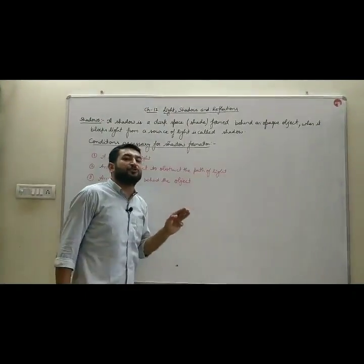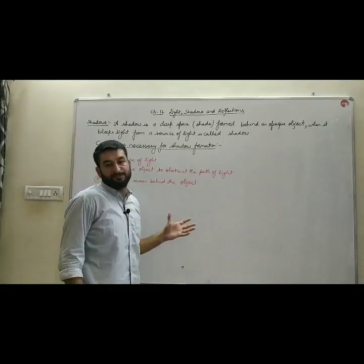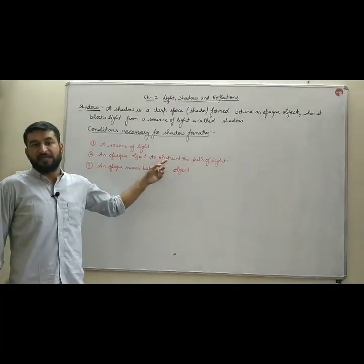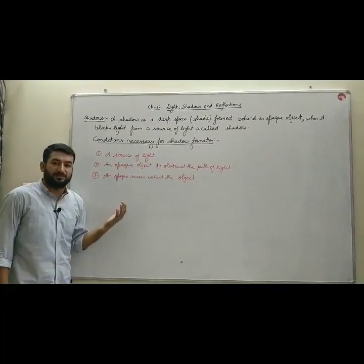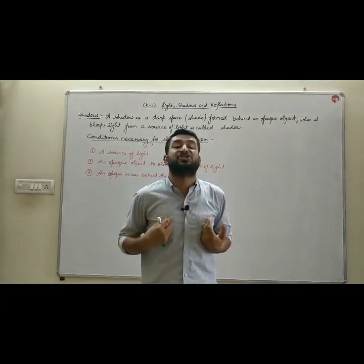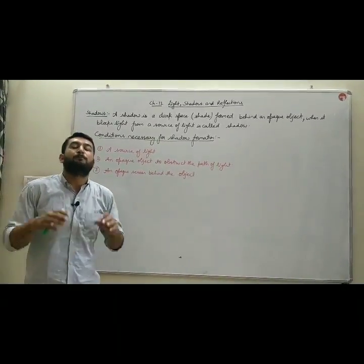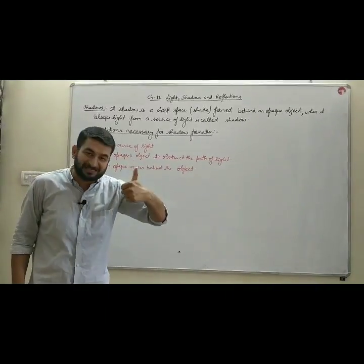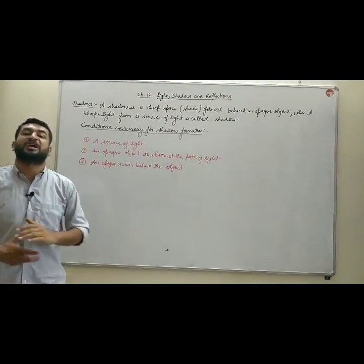There are three conditions necessary for a shadow — this is a very important question for your exam. The first condition is a source of light. The second is an opaque object to obstruct the path of light. The third is an opaque screen behind the object on which the shadow is formed. Shadow is a dark space formed behind an opaque object when that object blocks the path of light from its source.